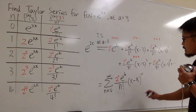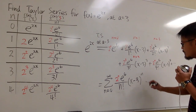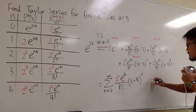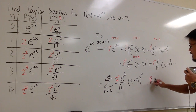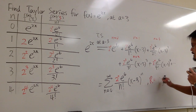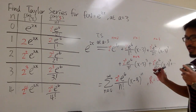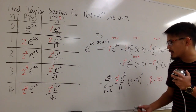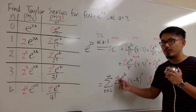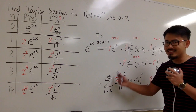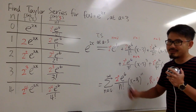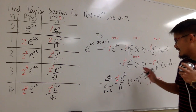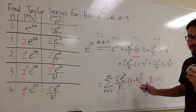At the very end we have to state the radius of convergence. R is equal to infinity — it converges everywhere. The way to verify this is to use the ratio test with the sigma notation form. And that's it!